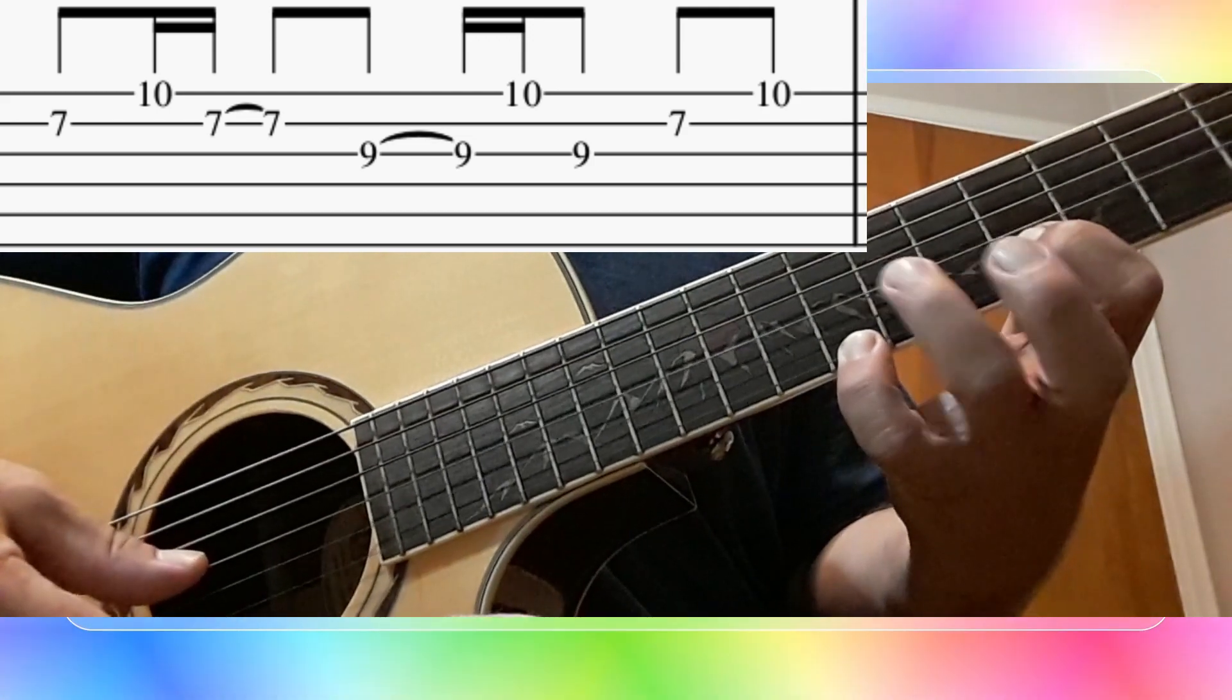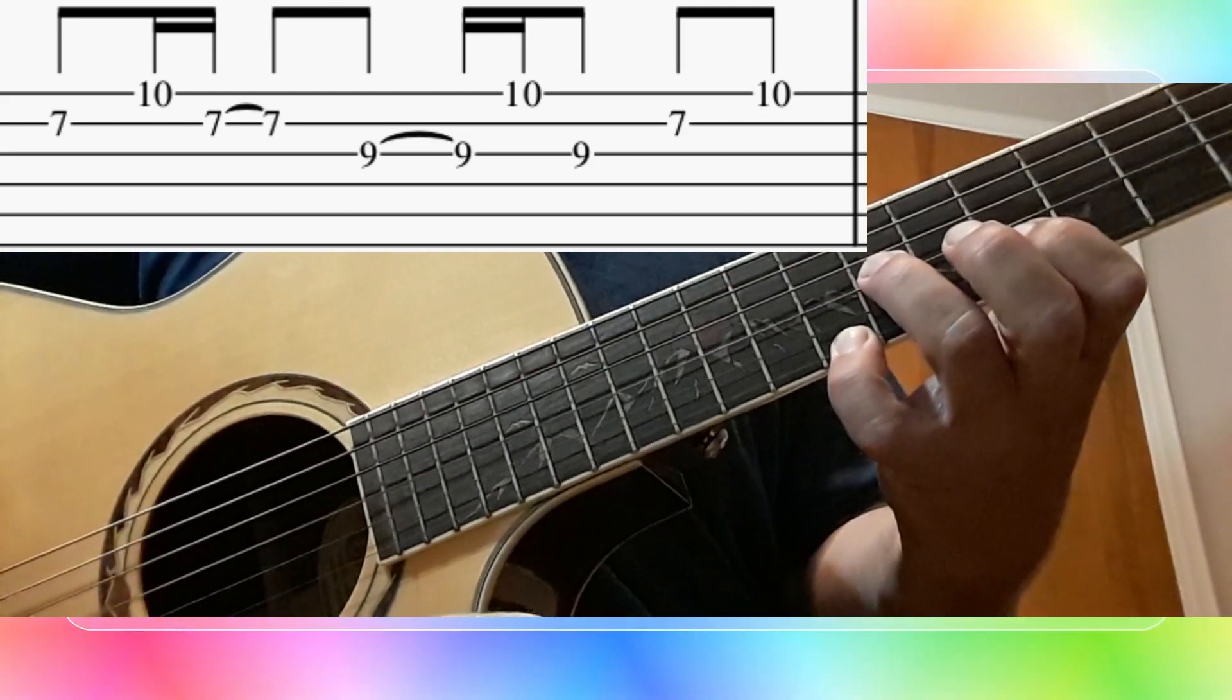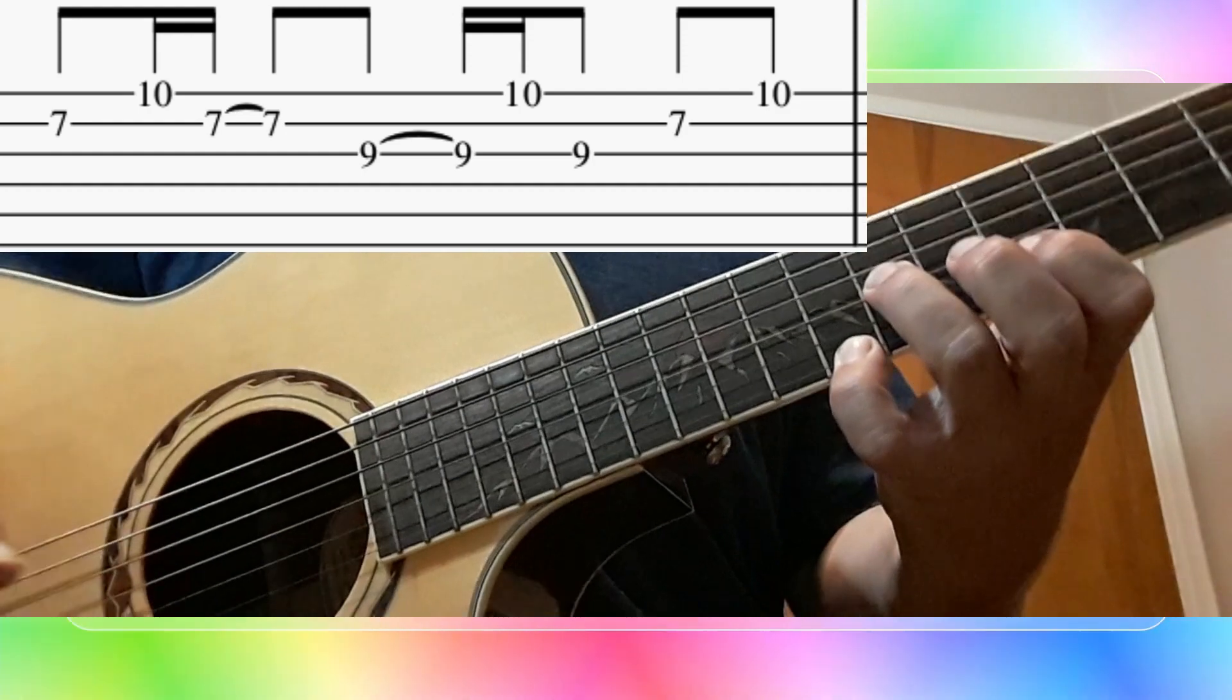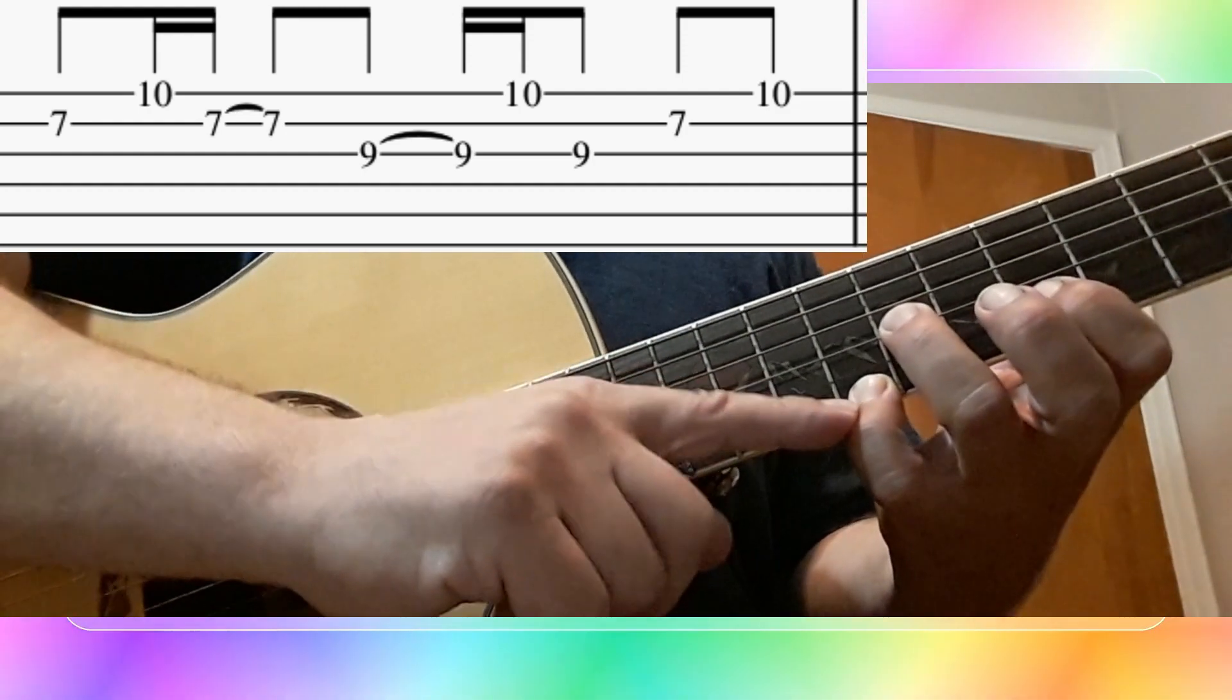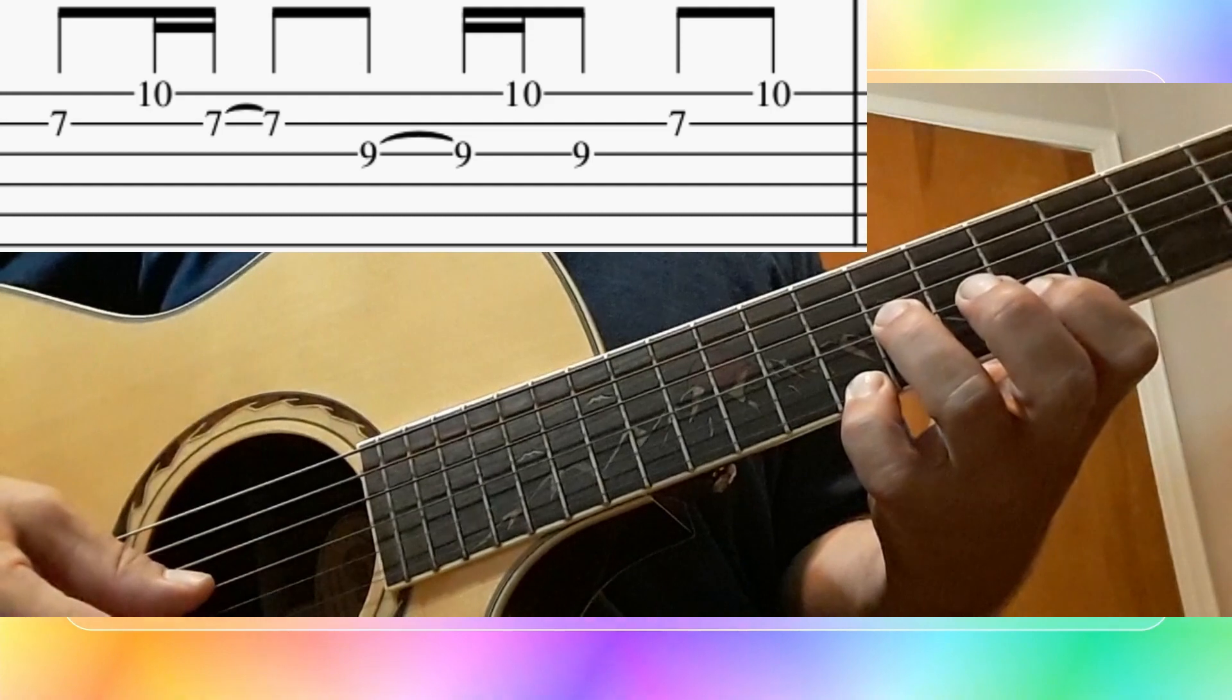Now go to the 3rd string with your 3rd finger and play number 9. Back to the 1st string at number 10. This 4th finger is going to stay on the 1st string at number 10, or letter D, the whole time.